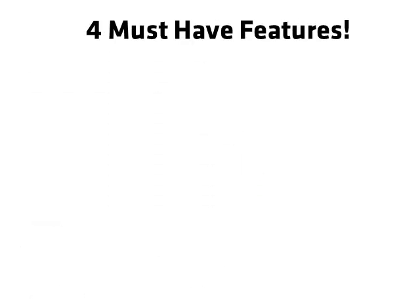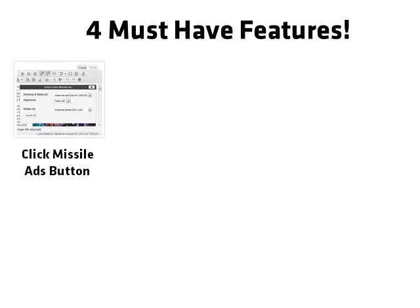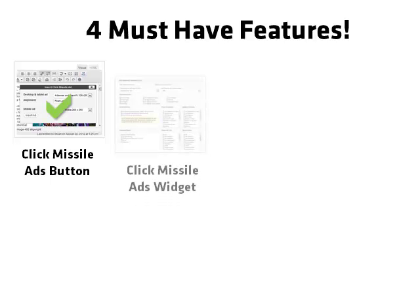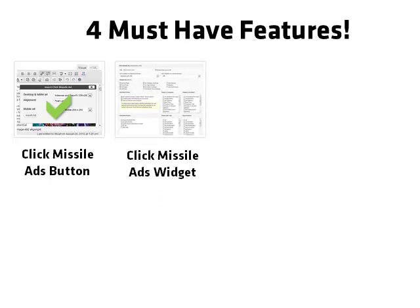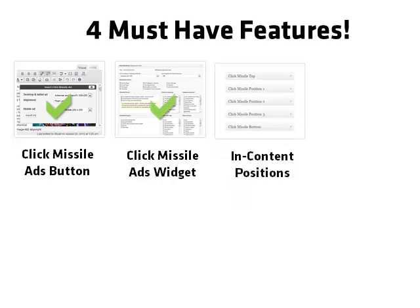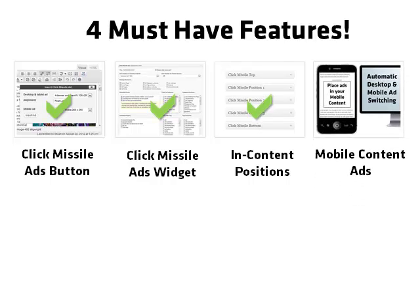So there you have it — four must-have ad placement features for WordPress. The Click Missile ads button, the quickest and easiest way to place specific ads direct into your posts. The Click Missile ads widget, for targeting your ad widgets into your sidebars. In-content ad widget positions, for injecting ad widgets direct into your content. And mobile content ad switching, to help you maximize ad revenue from your mobile visitors too.